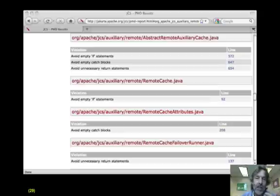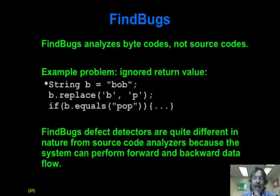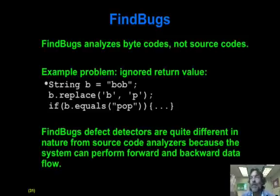Both CheckStyle and PMD operate on the source code. The third tool we're going to employ for automated quality assurance is called FindBugs. FindBugs differs because it analyzes the byte codes, not the source codes. Since byte codes don't contain indentation or Javadocs, FindBugs is of no use for those kinds of problems. But what it can do is find fairly subtle problems with respect to control and data flow.